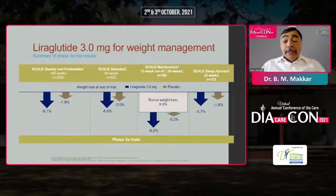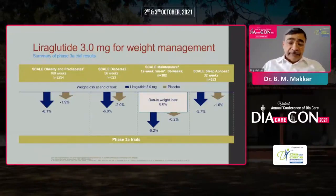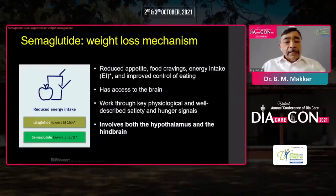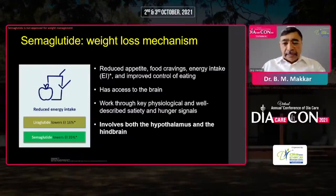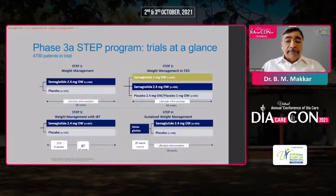The first drug exclusively studied for weight management is liraglutide 3mg, which was studied in non-diabetic obese individuals and showed significant weight loss, though it lowered energy intake by only 16%. Data from semaglutide has clearly shown it reduces energy intake much more significantly — to the tune of 35%. It reduces appetite, reduces food craving, and acts by a central mechanism involving both the hypothalamus and midbrain.